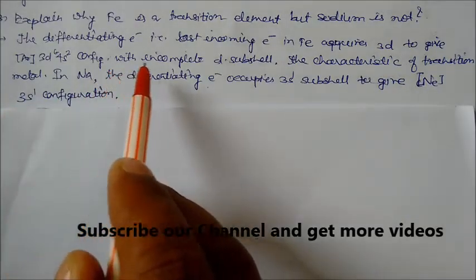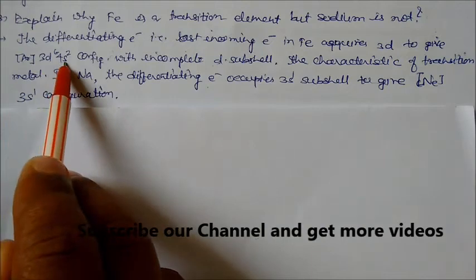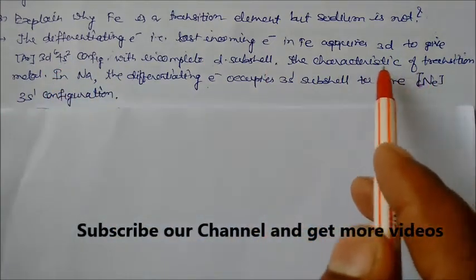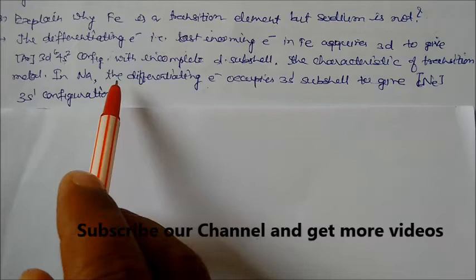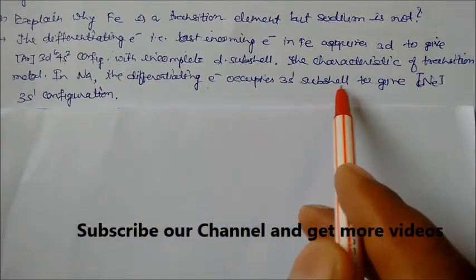With incomplete 3d, this is incomplete 3d6, which is the characteristic of the transition metal. In sodium, the differentiating electron, means the last incoming electron, occupies the 3s1 subshell to give neon 3s1 configuration. That's why iron is a transition element but sodium is not.